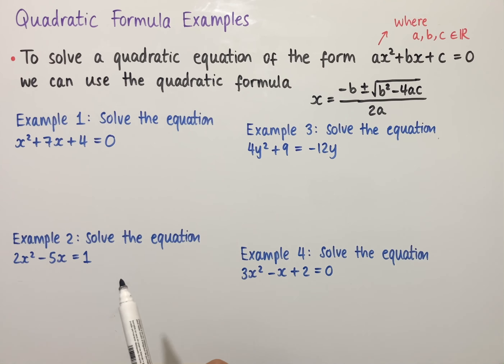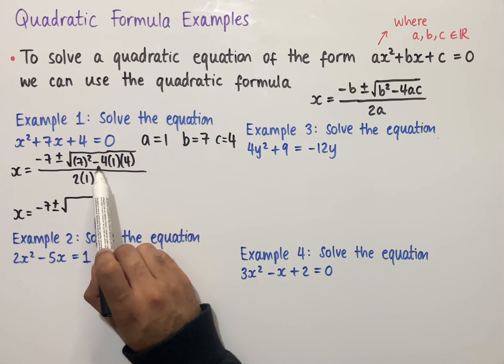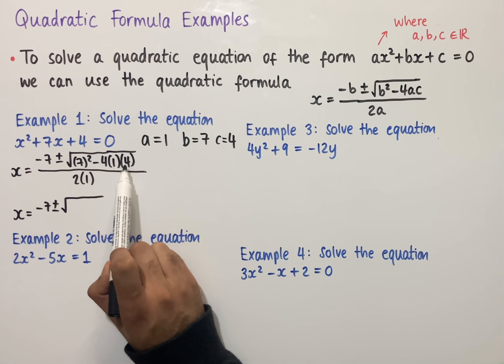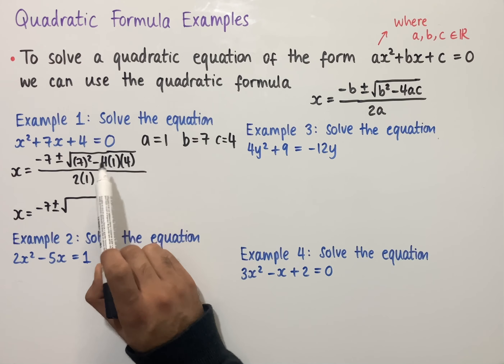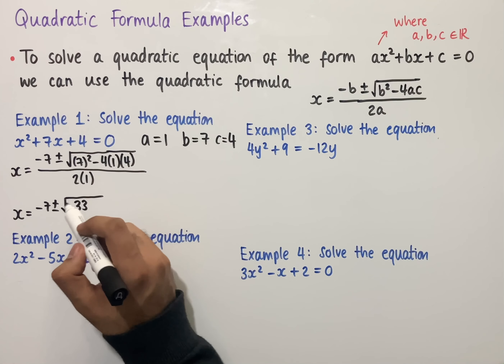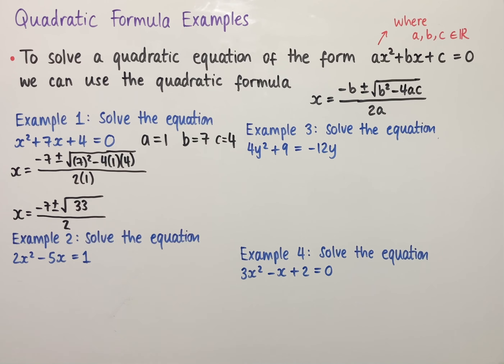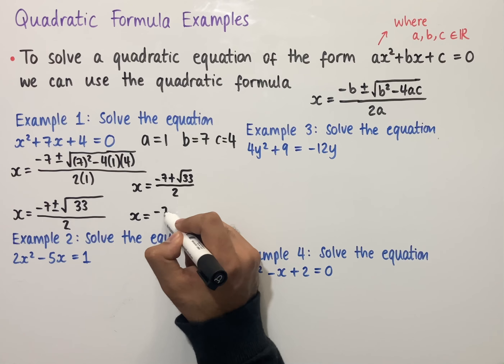Substituting into the quadratic formula, we have x equals minus b, so in this case that's minus 7, plus or minus the square root of b², so that's 7 all squared, minus 4 times a times c — so a is 1, c is 4 — all divided by 2a, which is 2 times 1. If we now simplify this, we have x equals minus 7, plus or minus the square root of 7², which is 49, minus 4 times 1 times 4, which is 16. So 49 minus 16 gives us 33, all divided by 2.